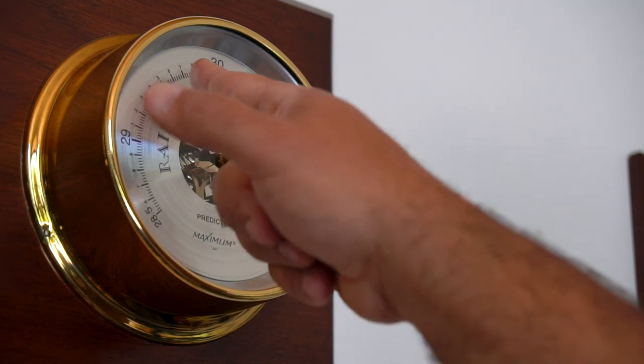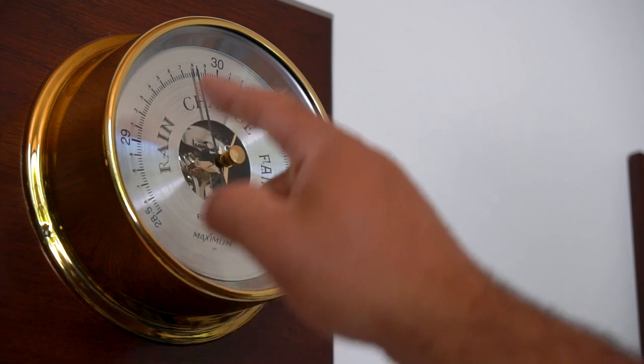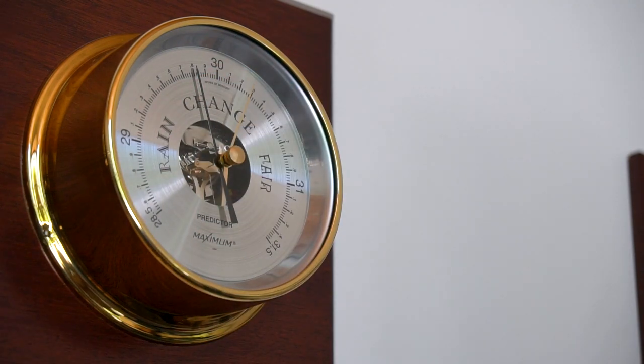The black pointer is your indicator pointer. Where the pointer is set, that is your current barometric pressure reading. At this point in time, the barometric pressure reading is 29.80 inches of mercury.